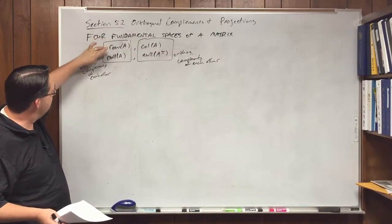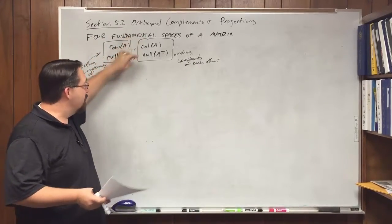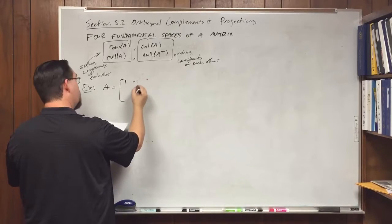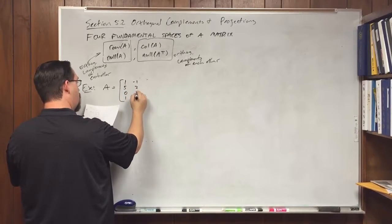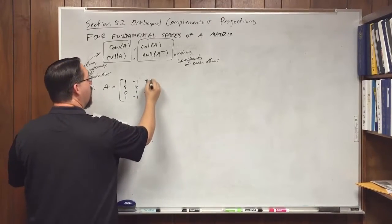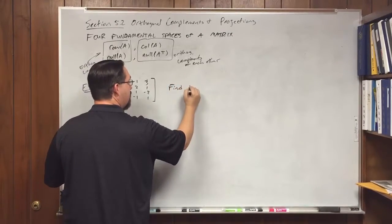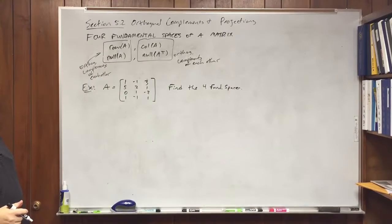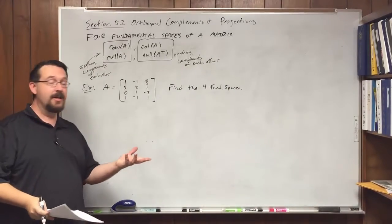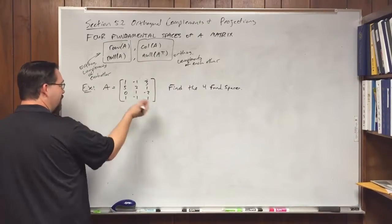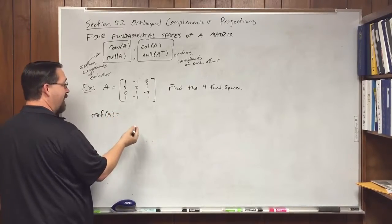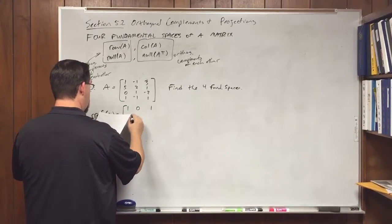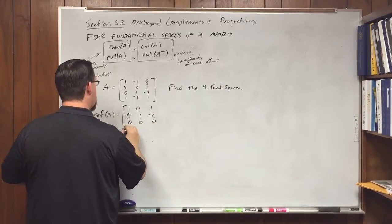What you need to be able to do is, given a matrix — say 1, -1, 1; 5, 0, 1; -1, 2, 1; -1, 3, 1; -2, 1 — find the four fundamental subspaces. All you need to do is the same thing we've always done with one extra step: finding the null space of A transpose. Taking the reduced row echelon form of A gives: 1, 0, 1; 0, 1, -2; 0, 0, 0; 0, 0, 0.